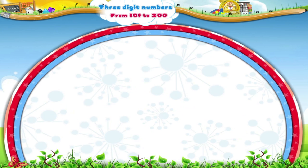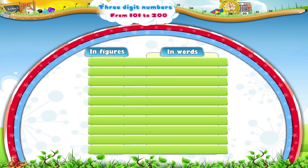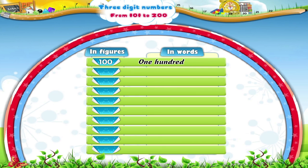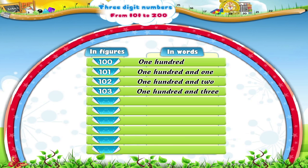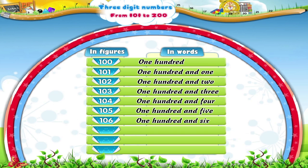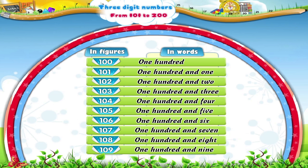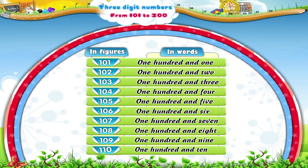Let us read the three-digit numbers from one hundred to two hundred with their number names. One hundred, one hundred and one, one hundred and two, one hundred and three, one hundred and four, one hundred and five, one hundred and six, one hundred and seven, one hundred and eight, one hundred and nine, one hundred and ten.